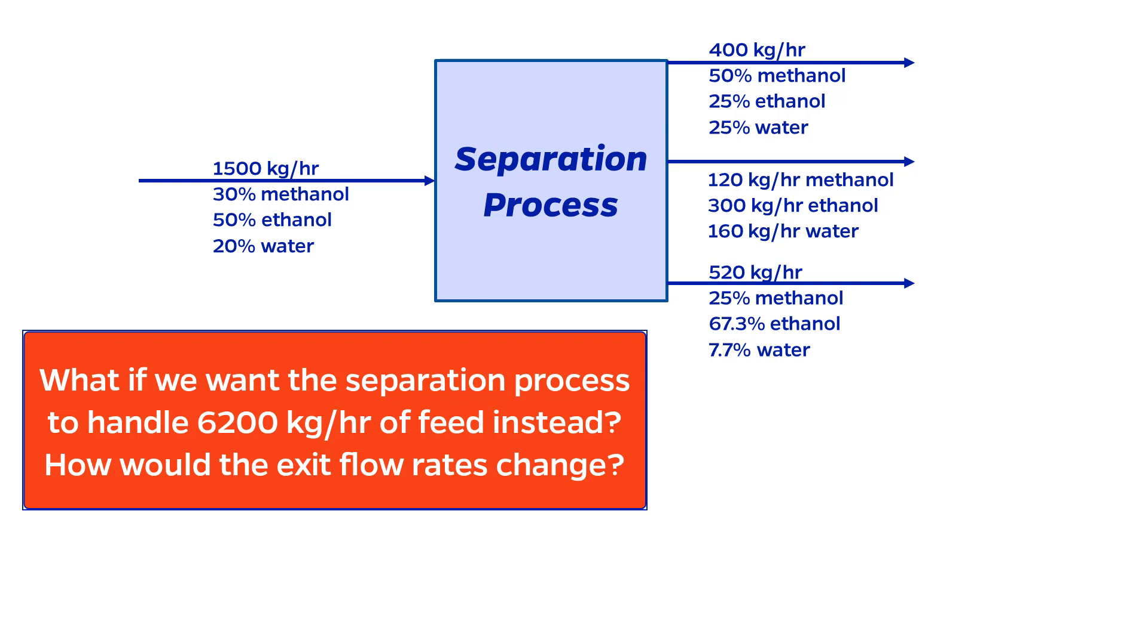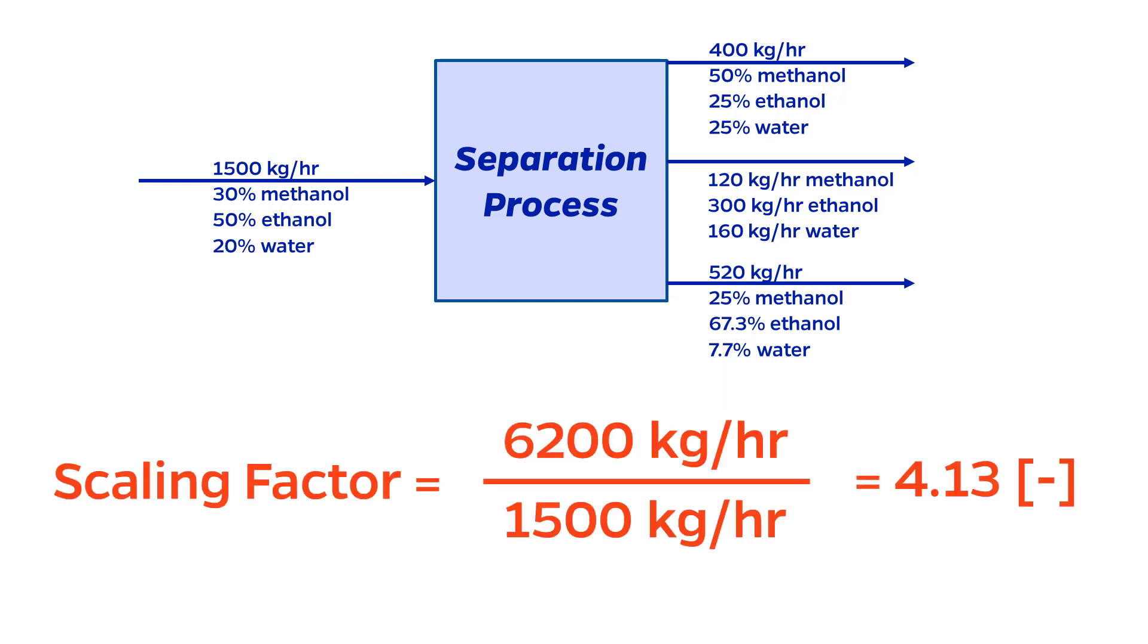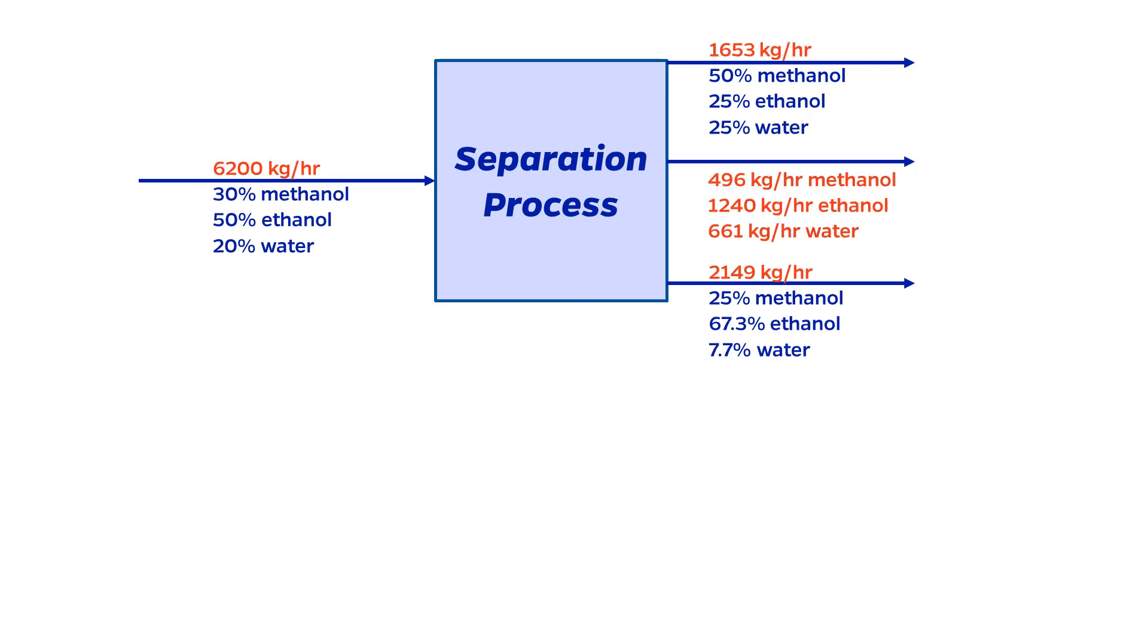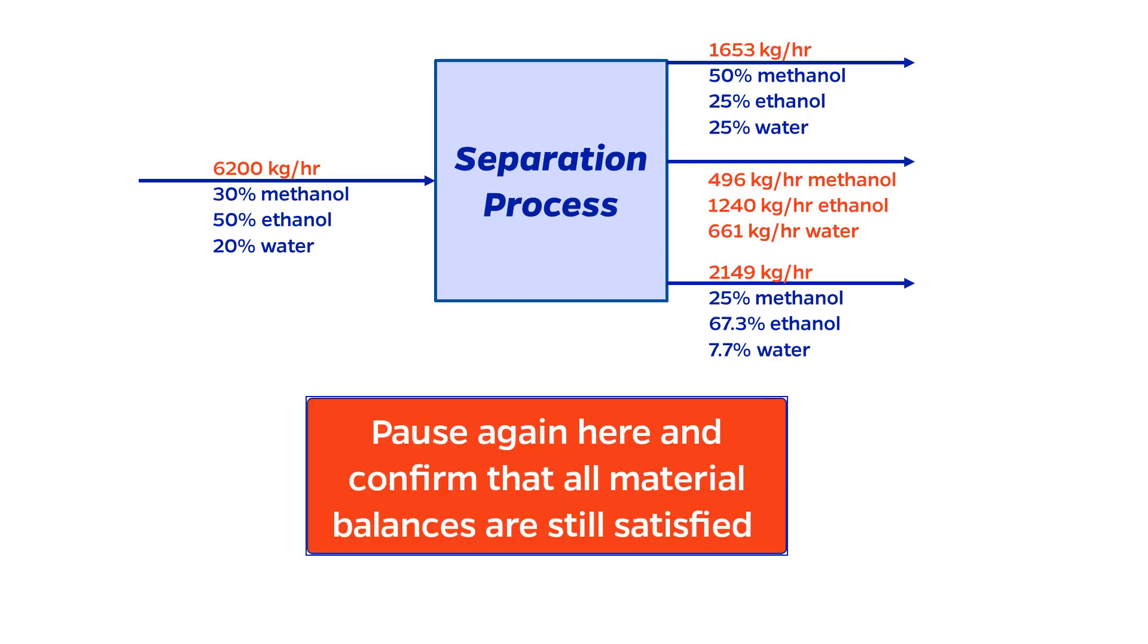Let's say that the target feed flow rate of the feed stream is 6,200 kilograms per hour. The scaling factor is 6,200 divided by 1,500. This equals 4.13. Note that the scaling factor should be unitless. Multiplying every other flow rate by the scaling factor gives the corresponding results that are on the screen now. I recommend pausing the video here again to make sure that the material balances are still satisfied, although the scale has changed.